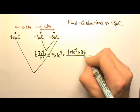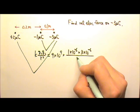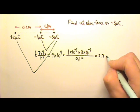Q2 is the 3 µC, and then the distance between the two is 0.1. So if I do this calculation, I'll get 2.7 N.